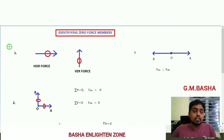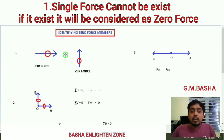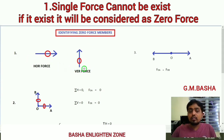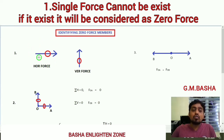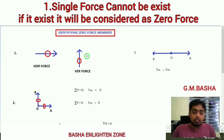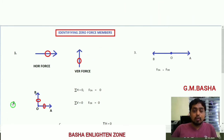First point: a single force cannot exist. Whether it is a horizontal force, a vertical force, or any inclined force — a single force cannot exist in nature. If it exists, it must be considered as a zero force. That applies to horizontal force, vertical force, or any other force.